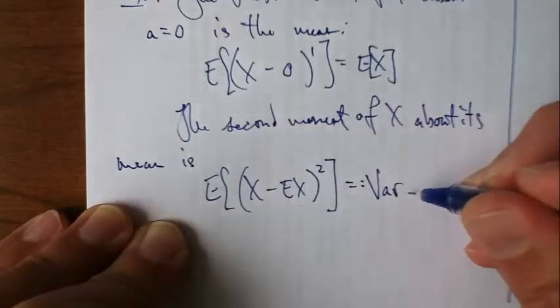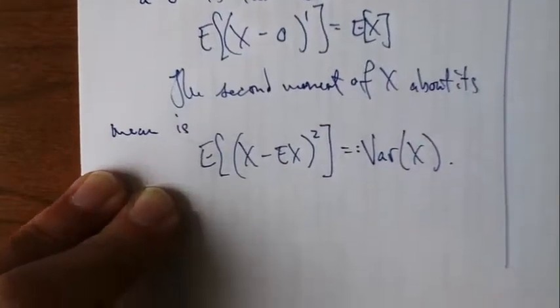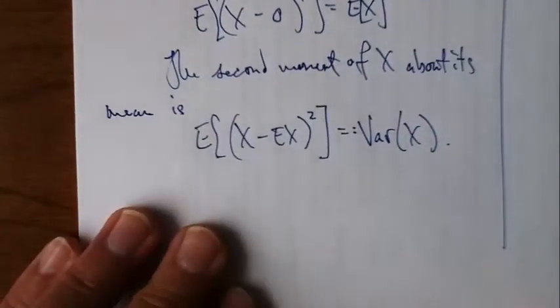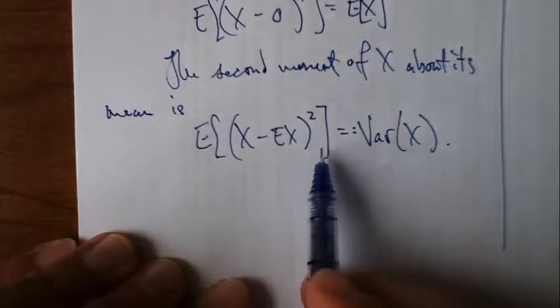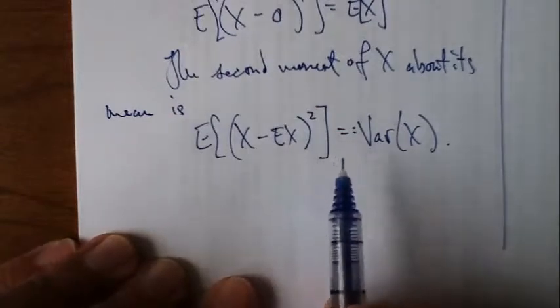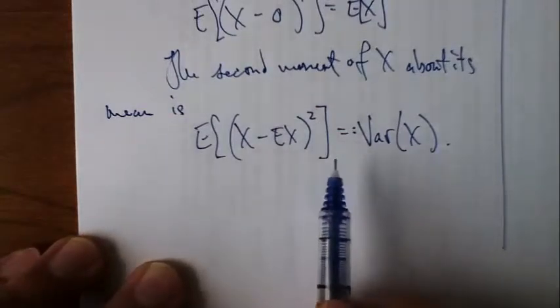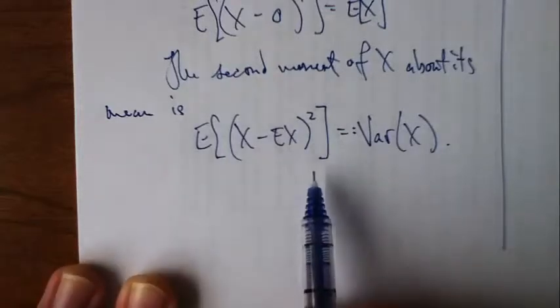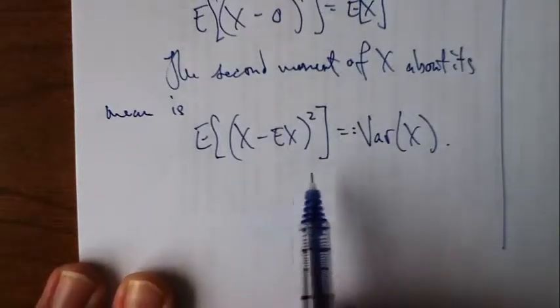That's how we define the variance of X. So at this point, you might notice, if you haven't already, the variance of a random variable is actually very closely related to the concept of moment of inertia of a physical object.